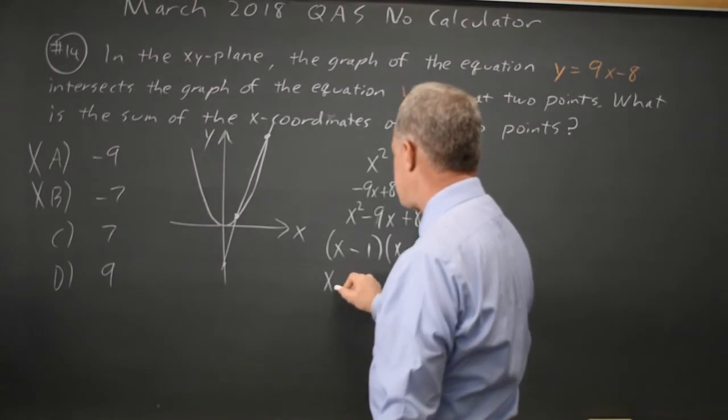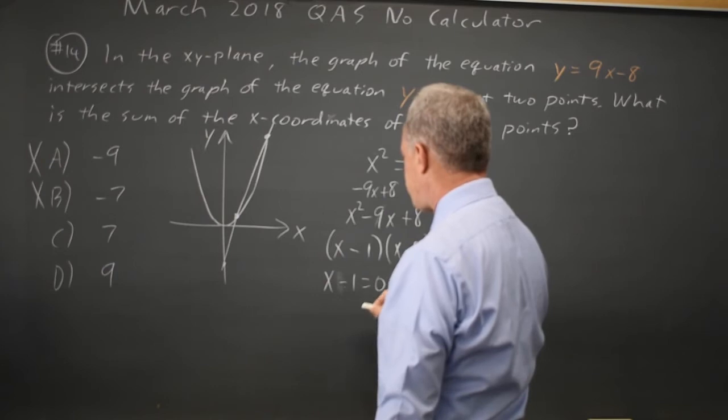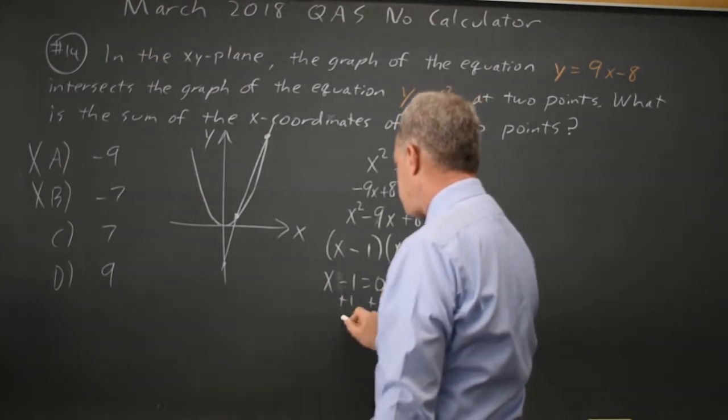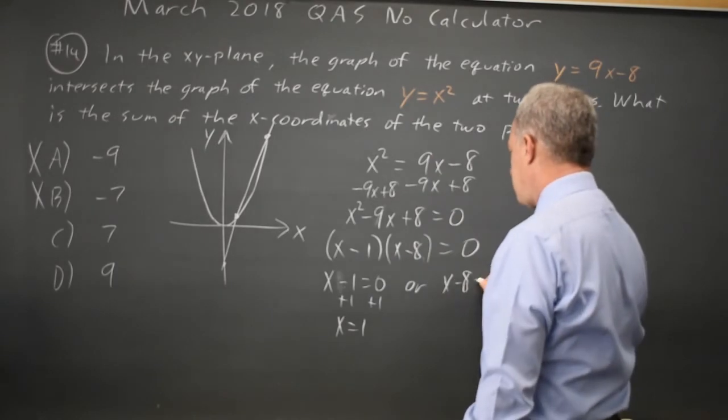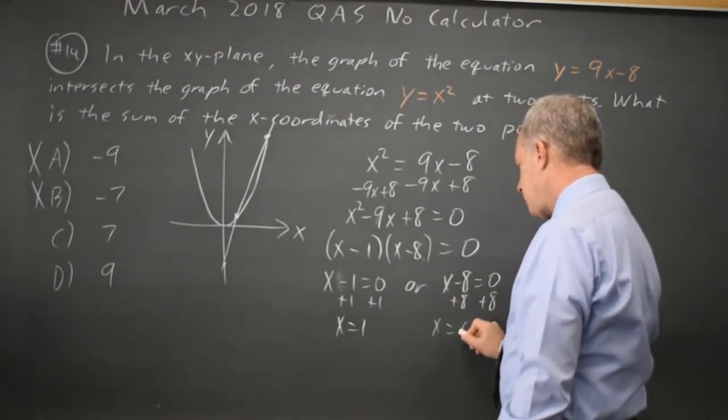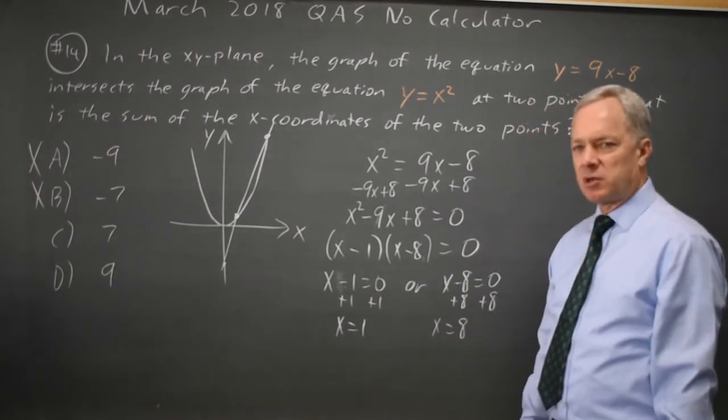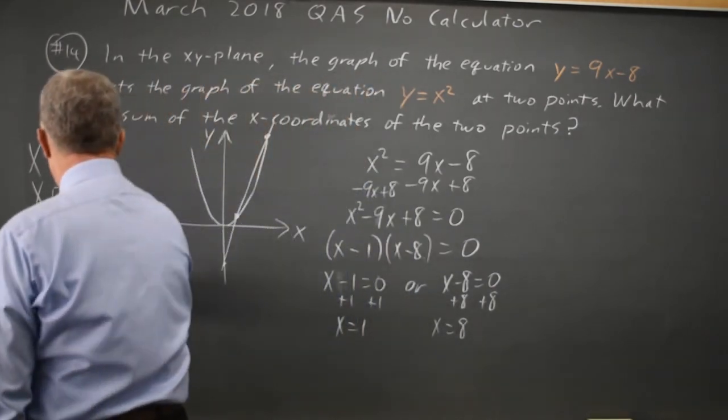And if that product equals 0, either x minus 1 equals 0, the first factor is 0, which gives us x equals 1. Or x minus 8 equals 0, which gives us x equals 8. The question asks for the sum of the x coordinates, which would be 1 plus 8 equals 9. Choice D.